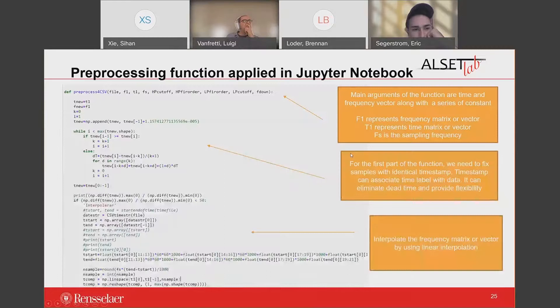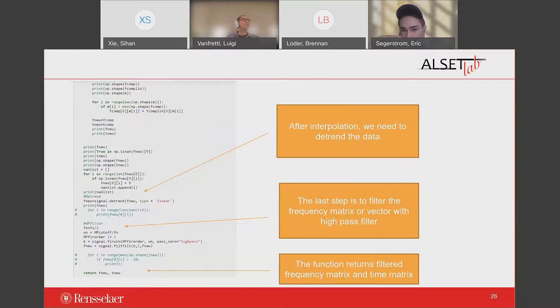Here is the preprocessing function applied in Jupyter Notebook. For the first part of the function, we need to fix samples with identical timestamp. Timestamp can associate time label with data, and it can eliminate data time and provide flexibility. The second step is to interpolate the frequency matrix by using linear interpolation. After the interpolation, detrend data is required and the filter frequency matrix is performed after detrending. The function returns the filter frequency matrix and time matrix.